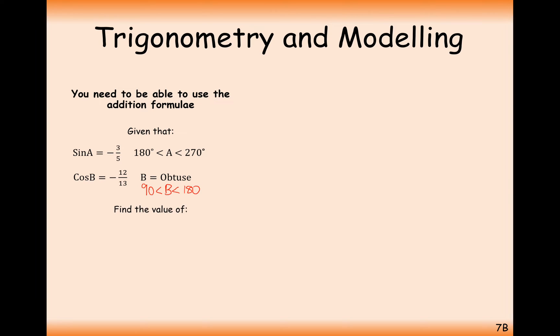We're asked to find the value of tan A plus B. Now what would be quite useful here is the tan A plus B formula: tan A plus tan B all over 1 minus tan A times tan B. So what we need to do is use these two given statements to work out the tan of A, tan of B and then substitute it into this tan A plus B formula.